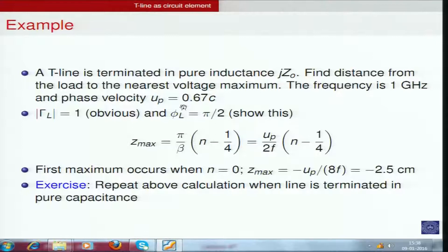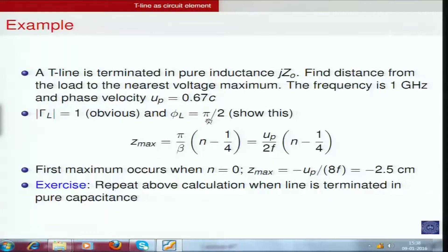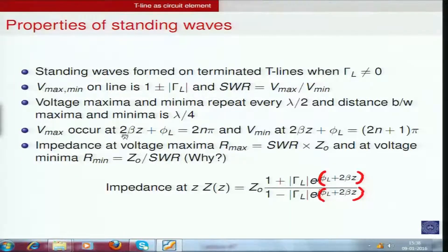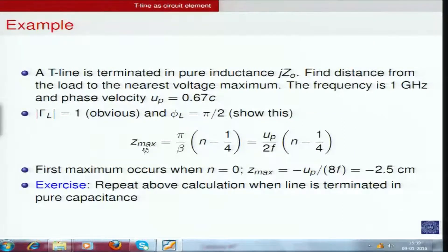To solve this, first find |gamma_L| and phi_L. With Z_L = j*Z0, gamma_L = (j*Z0 - Z0)/(j*Z0 + Z0) = (j-1)/(j+1), which has magnitude 1 and phase pi/2. Substituting phi_L = pi/2 into the maxima condition 2*beta*z + phi_L = n*pi gives z_max = pi/beta * (n - 1/4), where n is chosen to keep z_max negative.